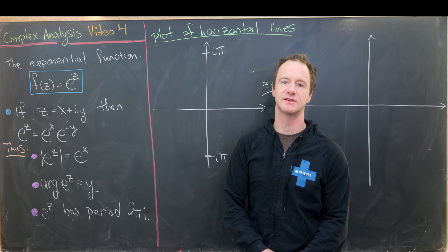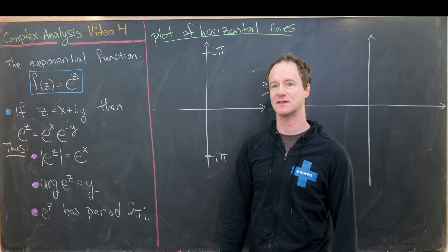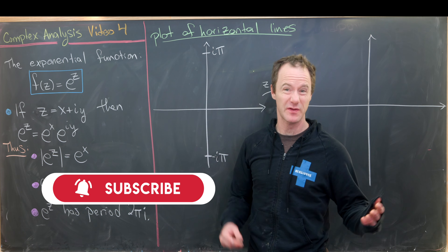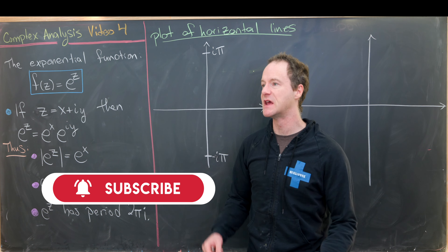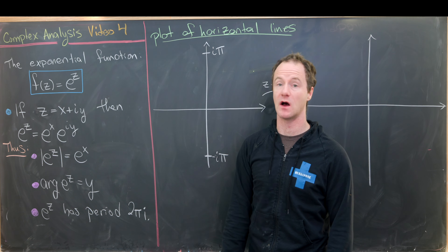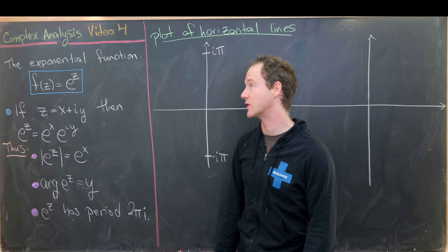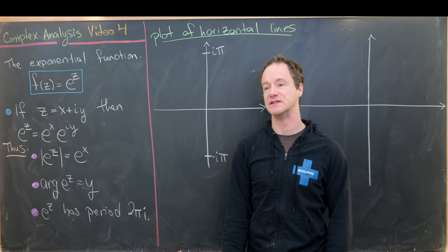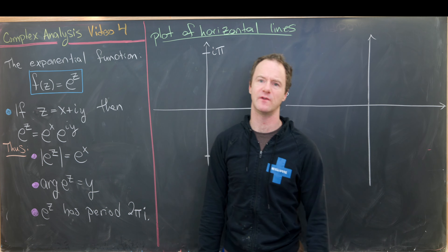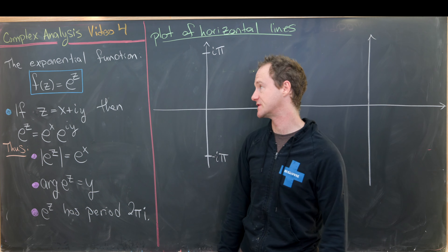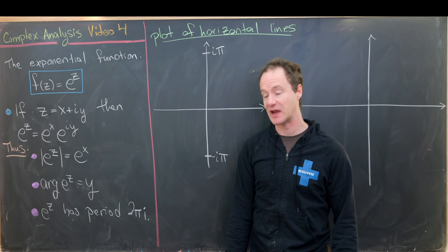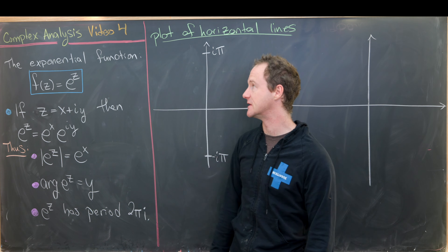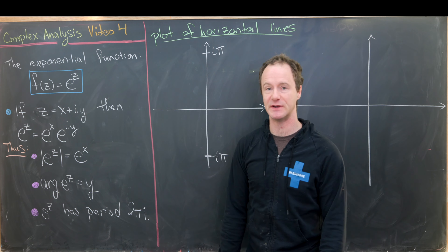This is the fourth video in a series to support a course in complex analysis. We're still working through the basics — the arithmetic of complex numbers and some basic functions defined on the complex numbers, as well as their behavior. So far we've looked at the square function and the square root function with its two branches. Today we're going to look at the exponential function and then the logarithm function, as well as its infinitely many branches.